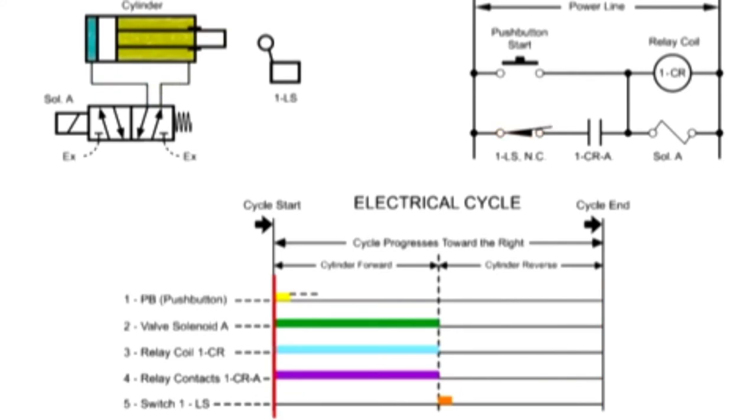Switch 1LS contacts close again as the cylinder backs off the switch, but the relay coil and valve solenoid do not become energized again because contacts 1CRA are open at this time. This begins again when the operator engages the push button once more.